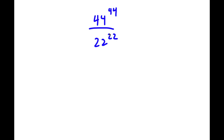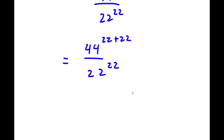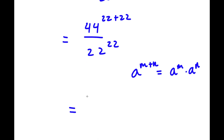In this problem, I have 44 to the power of 44 over 22 to the power of 22. To start, 44 is the same thing as 22 plus 22. So this equals 44 to the power of 22 plus 22 over 22 to the power of 22. If I have something in the form a to the power of m plus n, this equals a to the power of m times a to the power of n. So 44 to the power of 22 plus 22 equals 44 to the power of 22 times 44 to the power of 22.